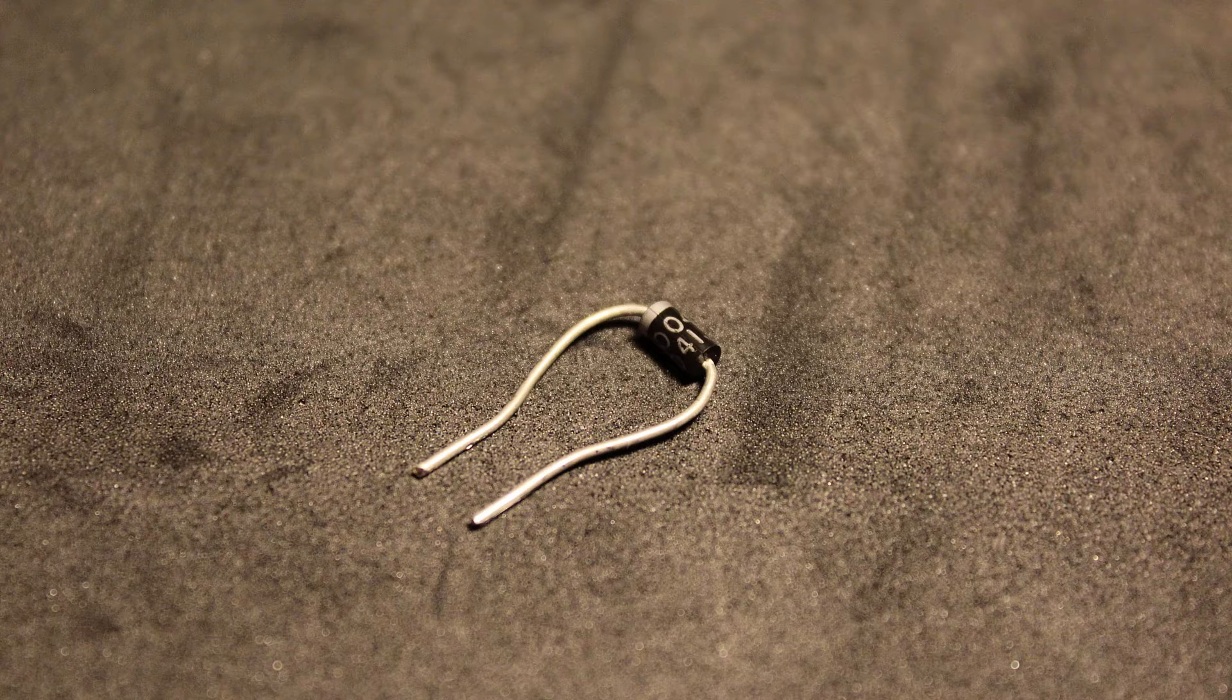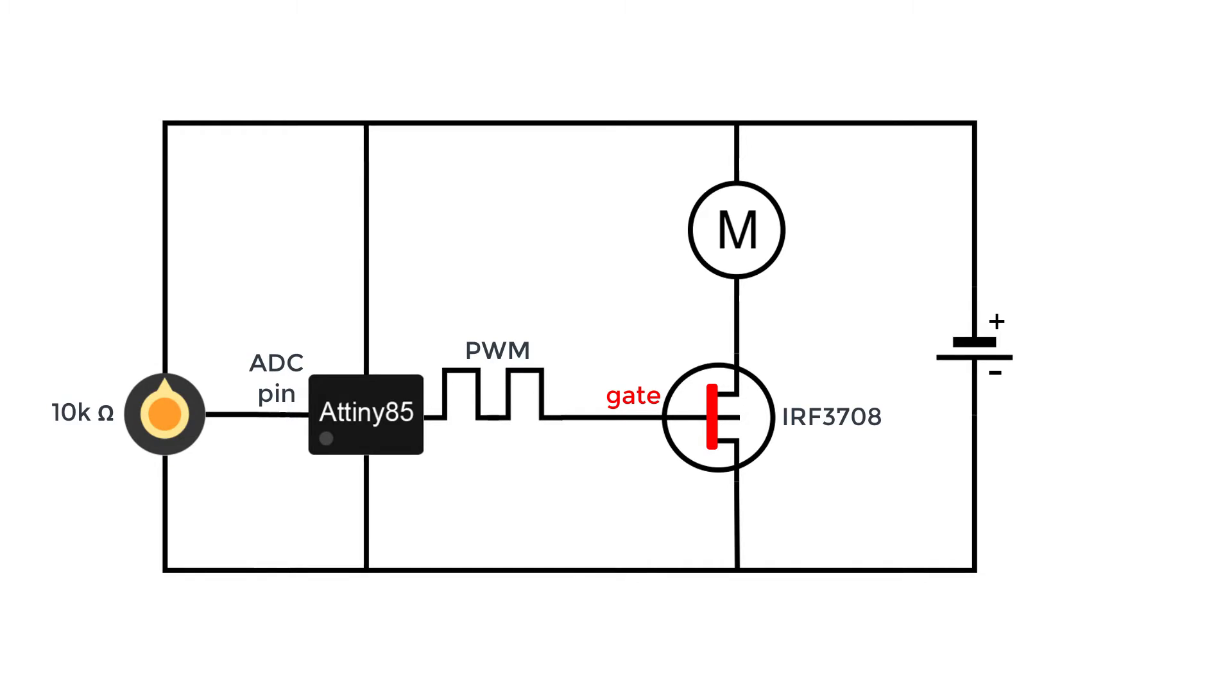We also need to use a diode across the DC motor. The reason we need a diode is when the power is off, the motor will still spin for a few moments which may cause a negative voltage spike which can damage the microcontroller, and we don't want that to happen.